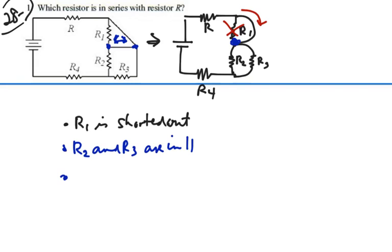And then the last thing is whatever current was flowing through R, as it splits to go through R2 and R3 would recombine, and that same current would go through R4. So essentially what we're saying here is R and R4 are actually in series.